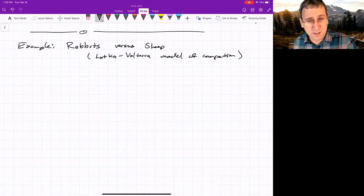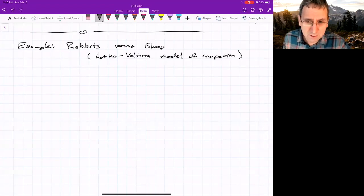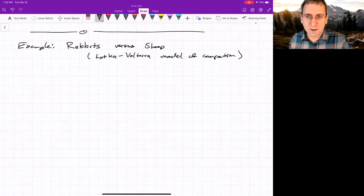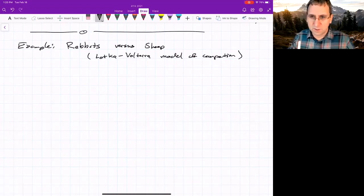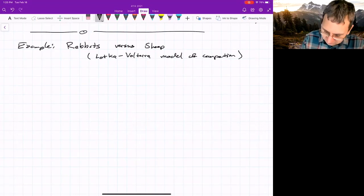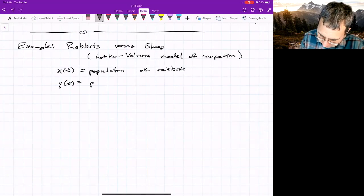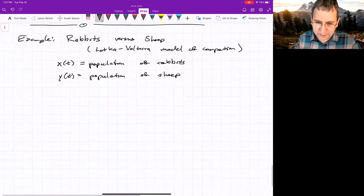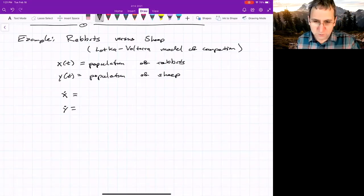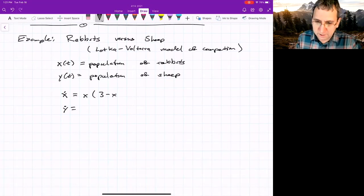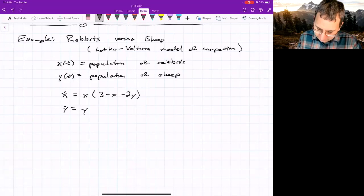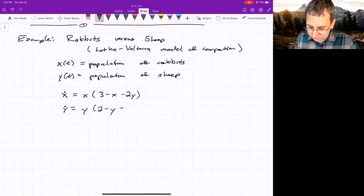It's often called the predator-prey model, but here we're not thinking of rabbits and sheep as predator and prey. They're just competing over the same food supply, which is grass, and the amount available of grass is limited. So we're going to ignore other complications like predators or seasonal effects. So I'll write this as X and Y, where X is the population of rabbits, Y is the population of sheep. Let's look at X dot and Y dot. I'll just write out a model and then explain it. So this is X(3 - X - 2Y), and Y dot is Y(2 - Y - X).